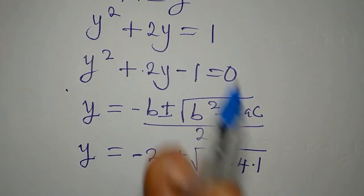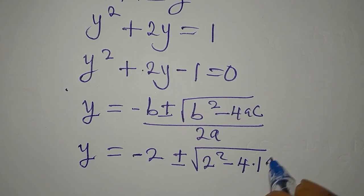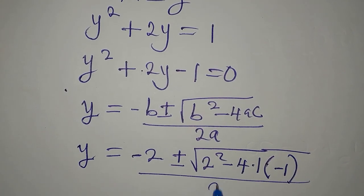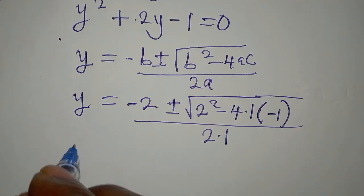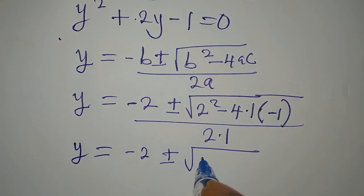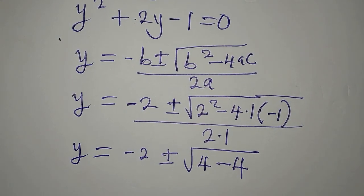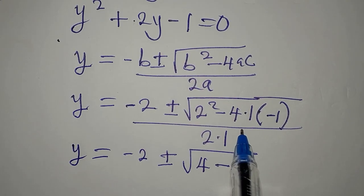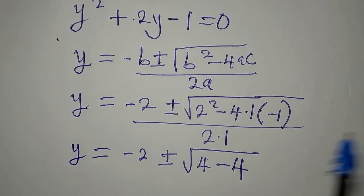B squared will be 2 squared minus 4 times 1, because a is the coefficient of y squared and that is 1, then multiply by c, our c is minus 1, then you divide by 2 times 1. So if we proceed, y will be minus 2 plus or minus.